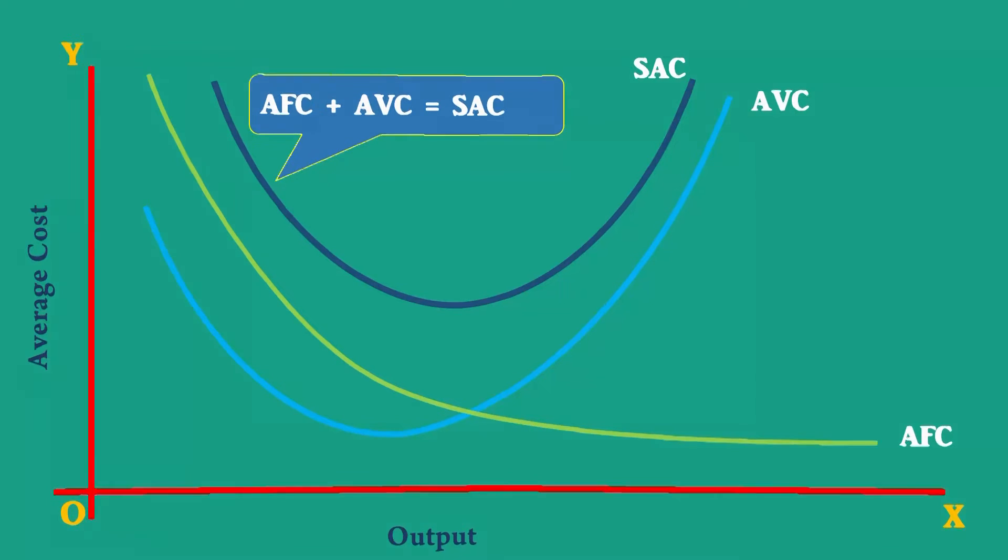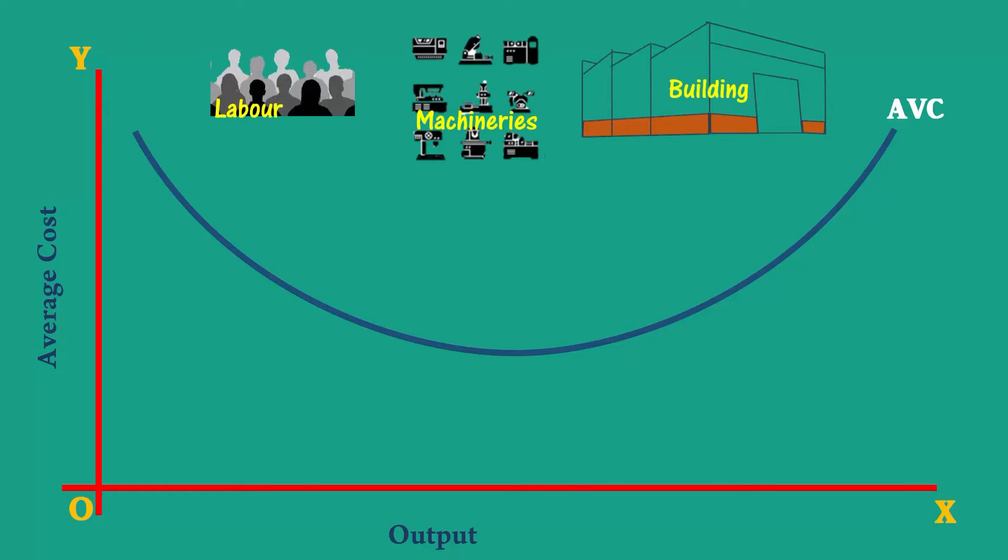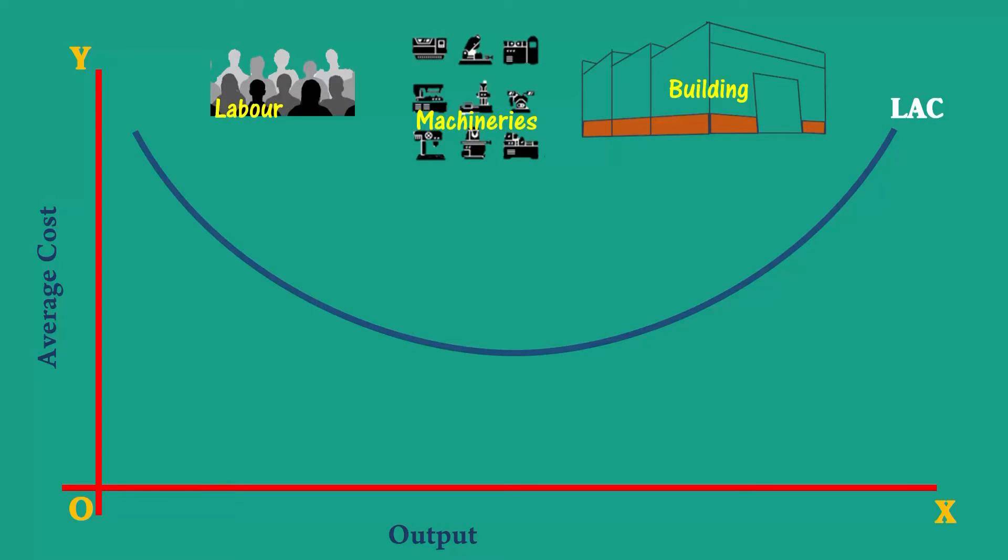Long run average cost curve consists of only one component. It is average variable cost. In the long run, all costs are variable. Hence, long run average cost is formed by the cost incurred on the variable factors.